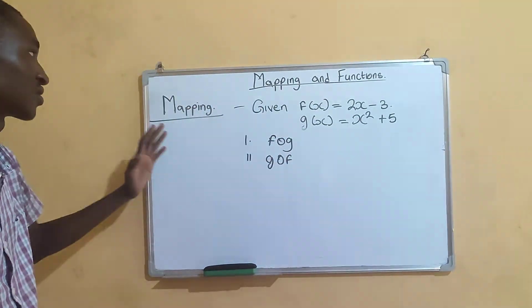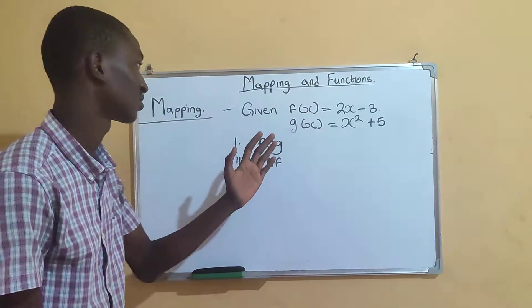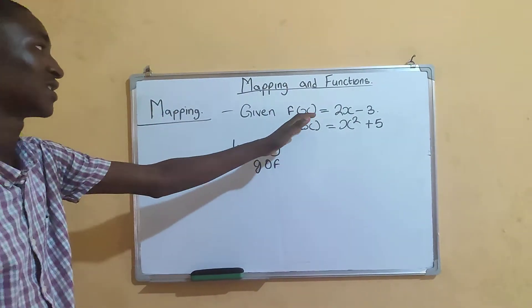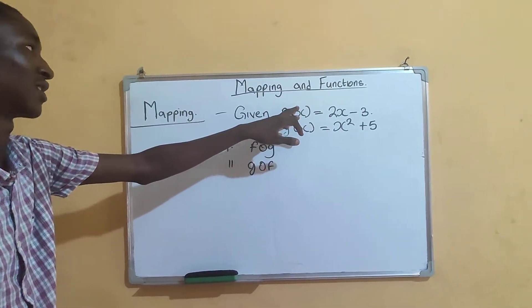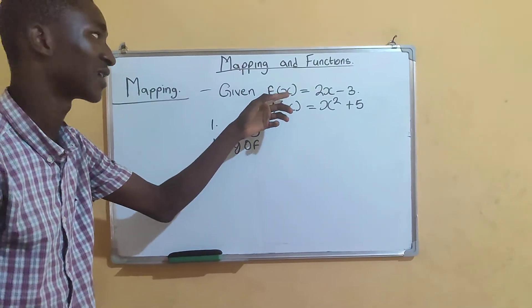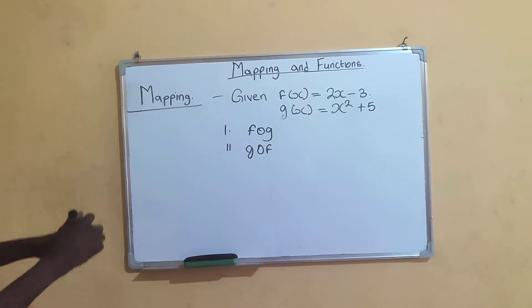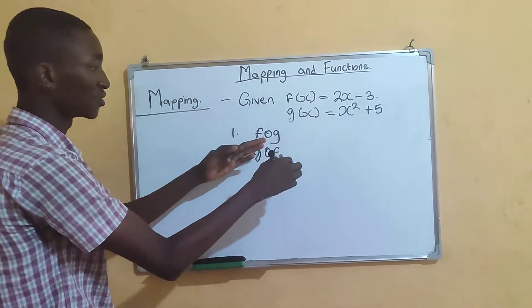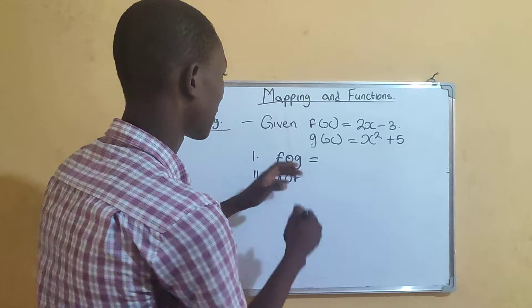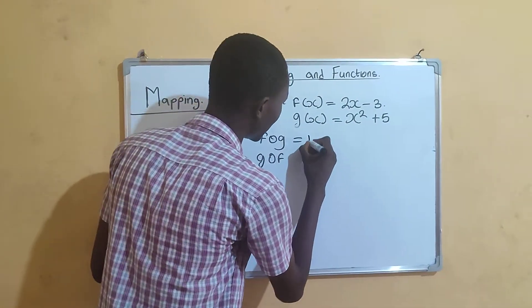Remember in the functions video we said that when we replace a letter or a number with this x, we have to replace wherever you find that x with that number. For this, fog means it's the same thing as saying f into bracket of g.